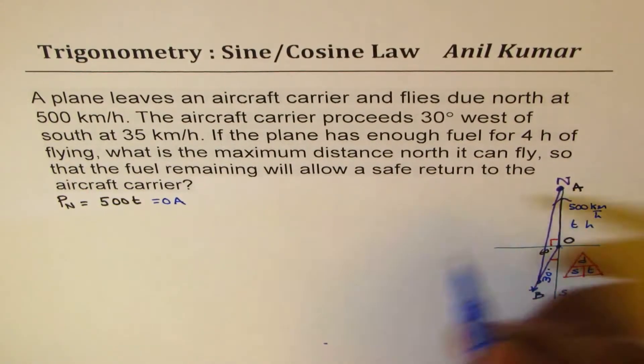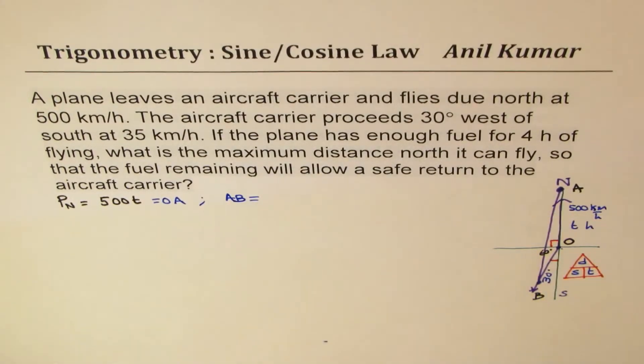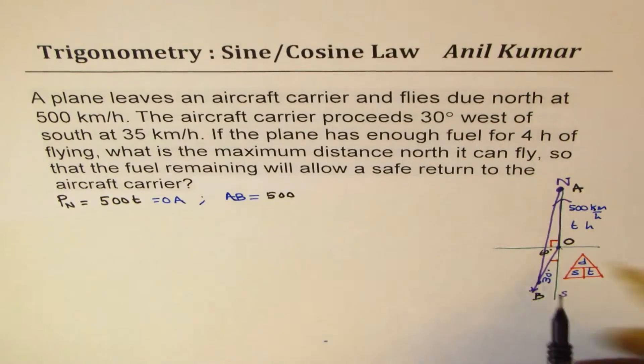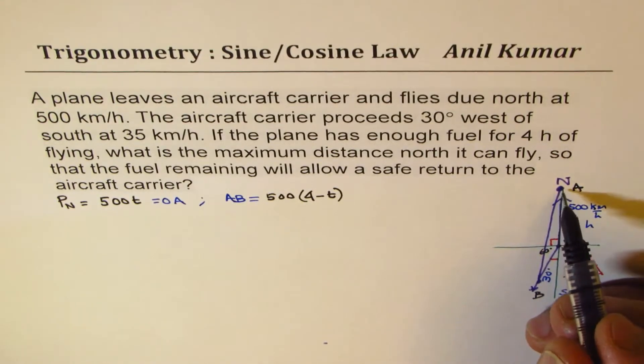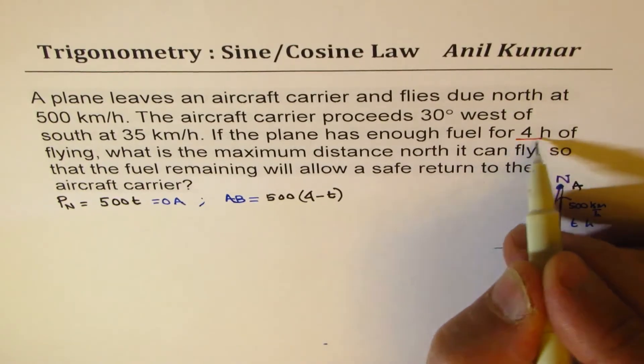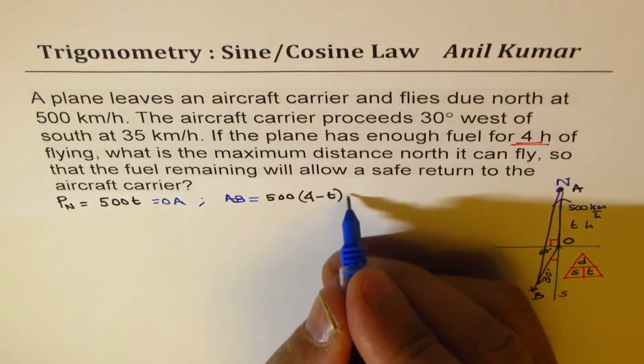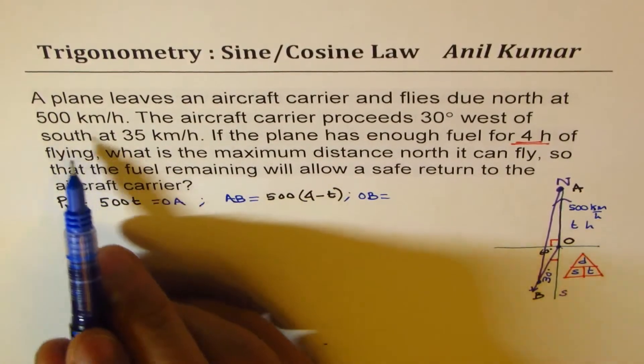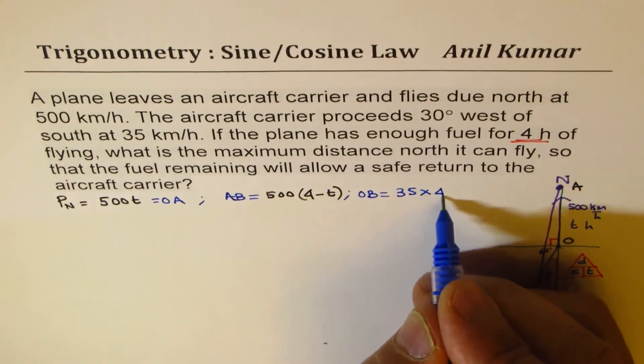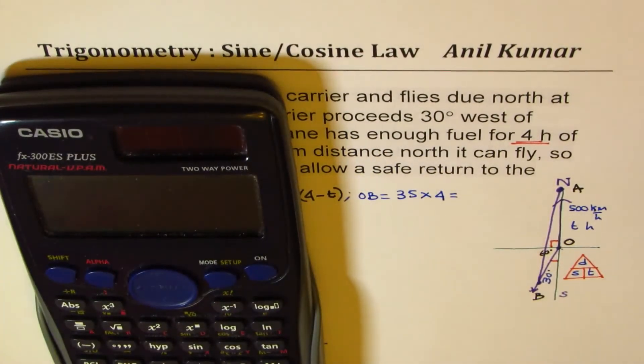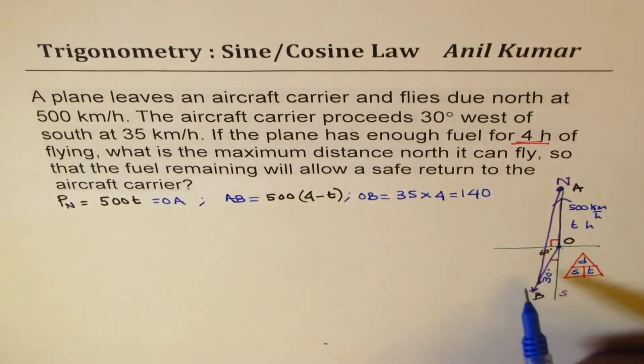So we know distance is speed into time. So the speed during this period is 500 kilometers per hour and time is T hours. So it is OA, we'll say this is OA for us. Now the return for the plane, which is AB, is also with the same speed of 500 kilometers per hour. So we'll write 500 for the speed, but the time taken will be 4 hours minus T since it flew for T hours north and total time is 4 hours. Since total time is 4 hours, otherwise it will not have enough fuel to return. What is OB equals to? OB, aircraft carrier is traveling with 35 kilometers per hour. So it will be 35 times 4 hours. So we have 35 times 4, which is equal to 140. So all these distances are in kilometers. So we know OB is 140.